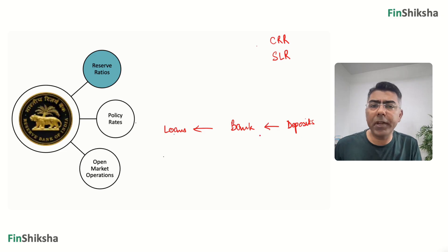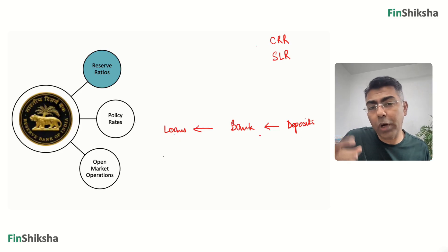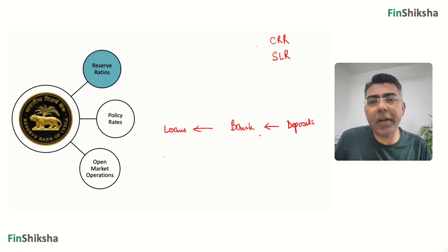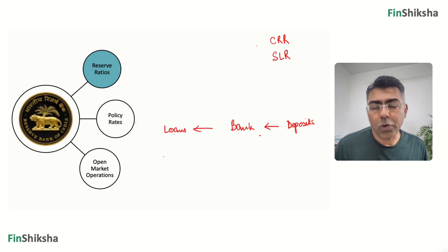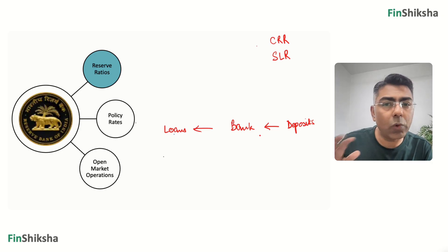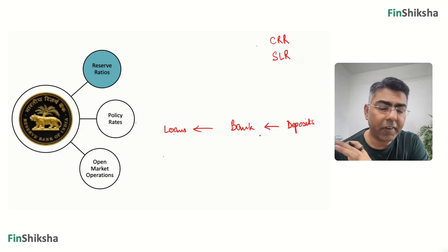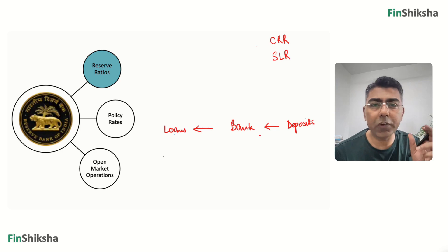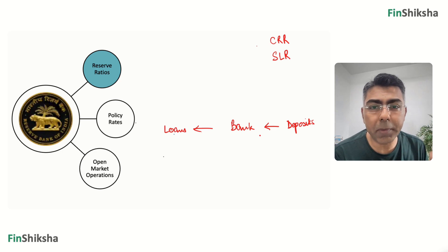Depositors have given money to the bank, but there's no fixed timeline — I can go tomorrow and take all my money out. So the bank doesn't know how long deposits will stay. Deposits are typically for a shorter tenure, but loans the bank gives out could be for a longer tenure — a home loan could be 20 years, a term loan to a corporate could be five years. This is what is commonly known as an asset-liability mismatch.